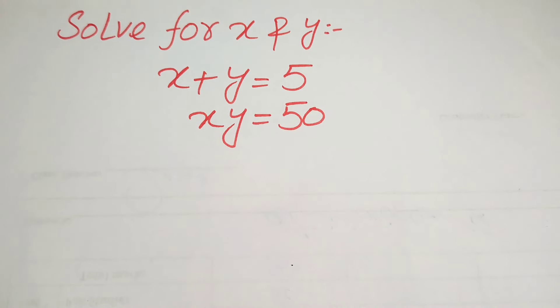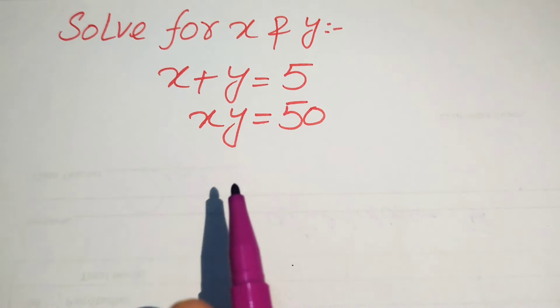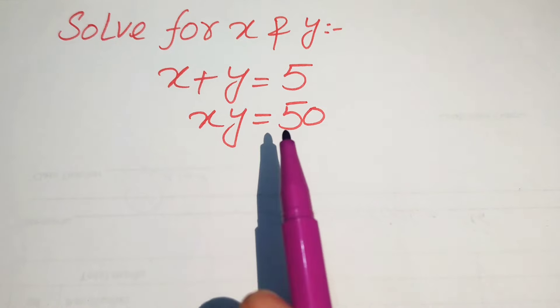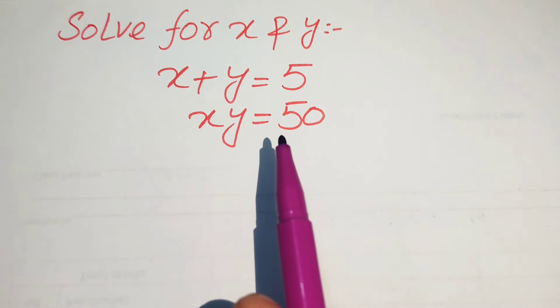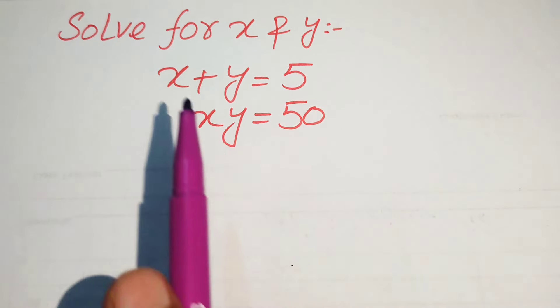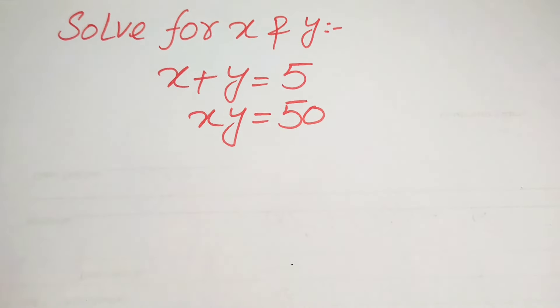Hello everyone, welcome. We are going to solve this math algebra problem. Here we have x plus y equals 5 and x times y equals 50, and we solve this problem for the values of x and y.